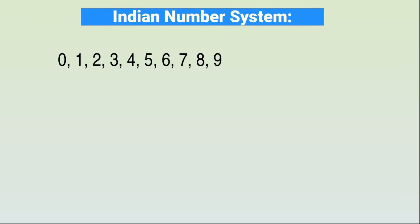Now we are going to see the Indian number system. In the Indian number system, the 10 symbols — that is 0, 1, 2, 3, 4, 5, 6, 7, 8, 9 — will be called as digits.